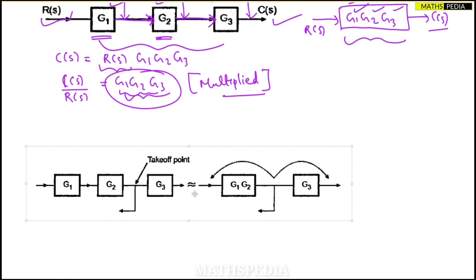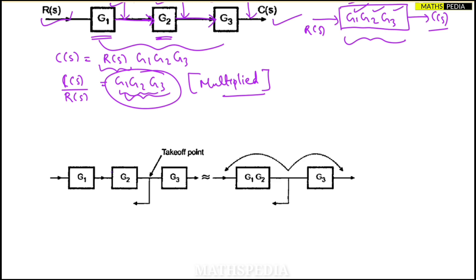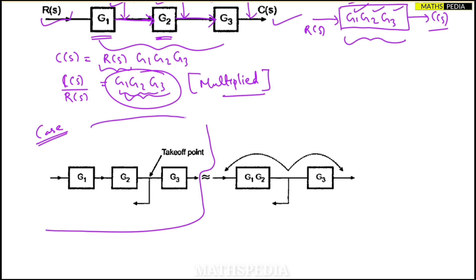Now here is a very important example. We have R(s) as input, C(s) as output, with blocks G1, G2, and G3. But observe carefully — a take-off point appears between the blocks, represented as a dot. Because this take-off point is present, we cannot consider G1, G2, and G3 as being in series.